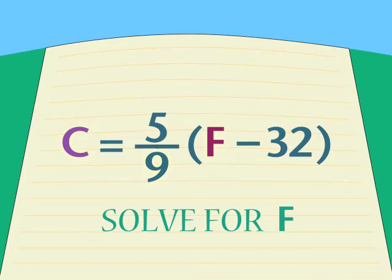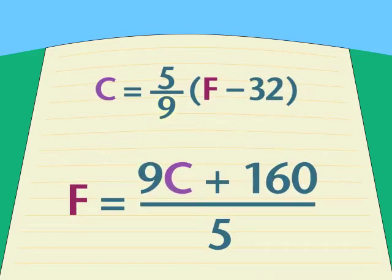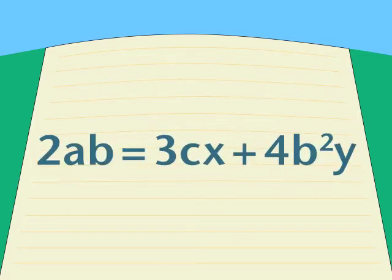Look what we did. We took an equation which contains several letters. We picked one letter, F, as our variable, and we solved for F by treating any other letter just as if it were a number. And it doesn't matter how many different letters there are in an equation. We can pick any one letter as our variable and solve for that letter. We do it by treating all the rest of the letters as if they were numbers.